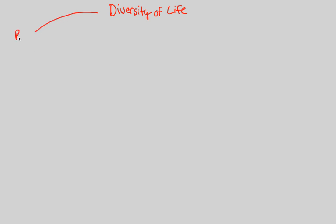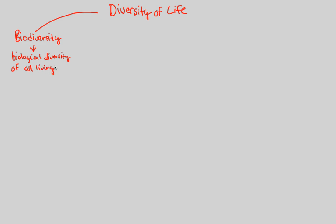The diversity of life is simply referred to as biodiversity. You can say you like to observe biodiversity in nature. This is simply the fact that you look at biological diversity, and that biological diversity is seen in all living organisms. There is an incredible amount of diversity on planet Earth, and that is labeled as biodiversity.